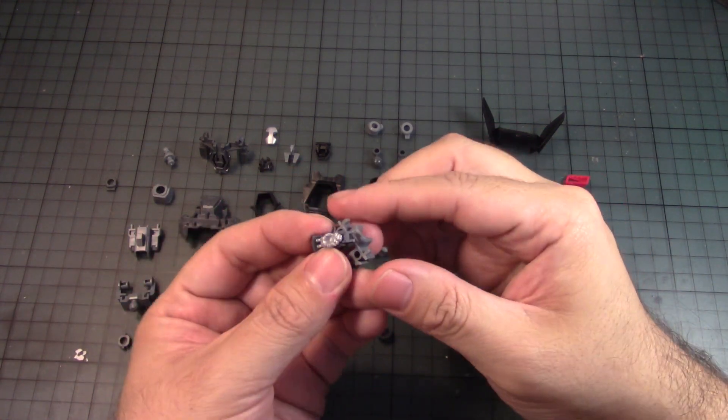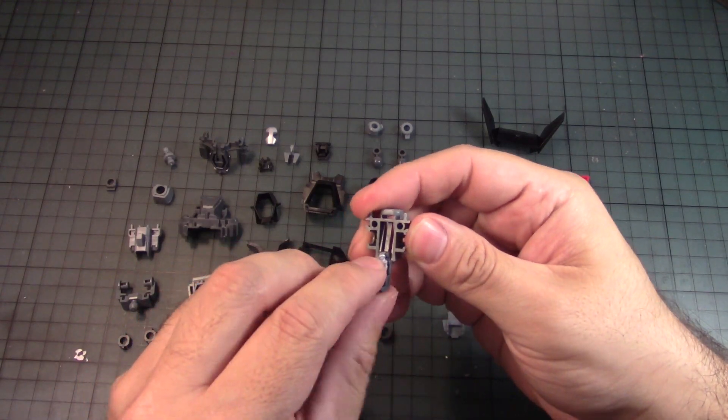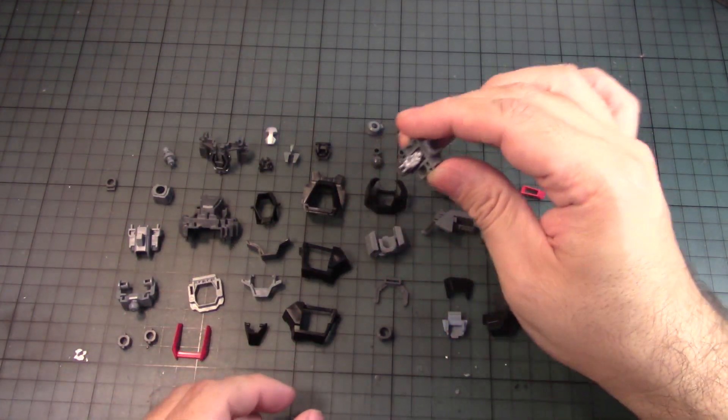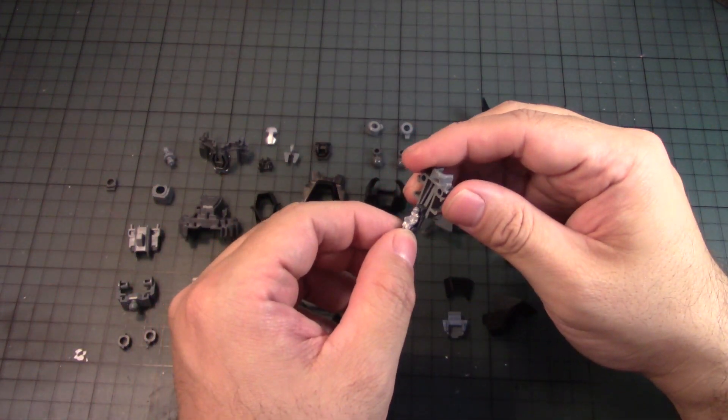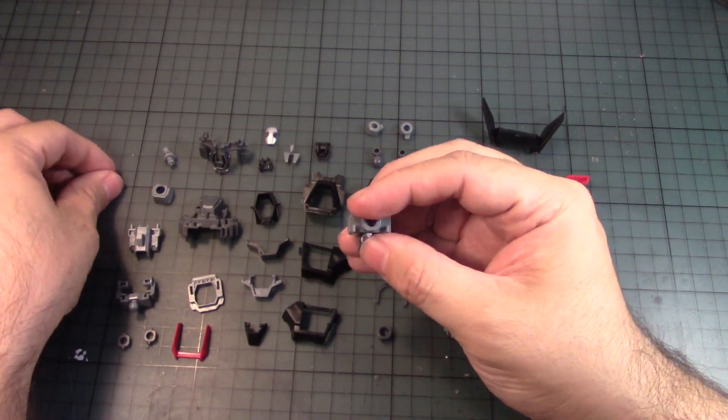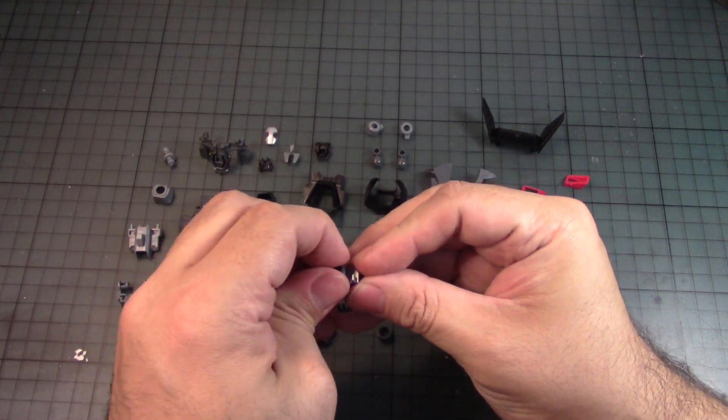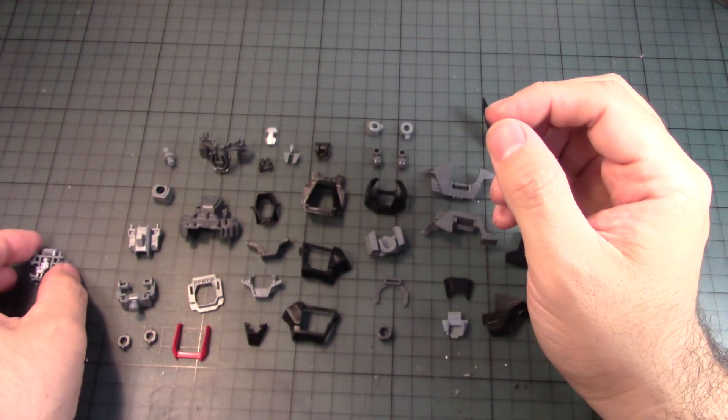We have this part here that you snap into place. It's designed to go up and down, I guess, when the Darkhound lands in its strider mode. You can bring this down like this so the pilot can get out. Then we have this little polycap here that goes under like so. So that's taken care of.